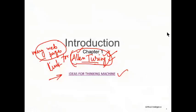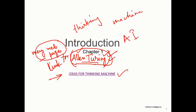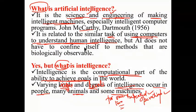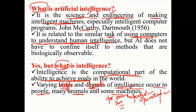Alan Turing was the first person who coined the term 'thinking machine,' which became the second word in AI — the 'I' standing for intelligence. This is an interesting story that helps you understand the subject itself.